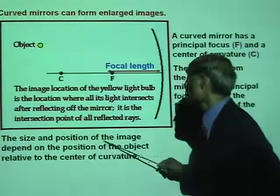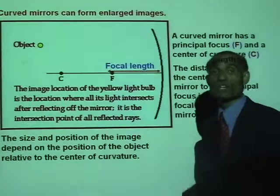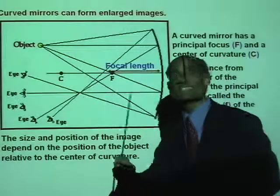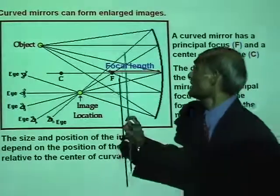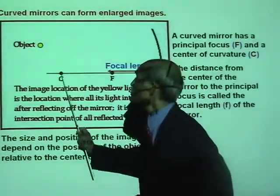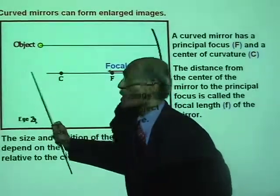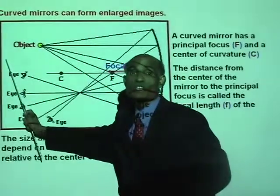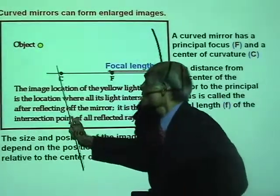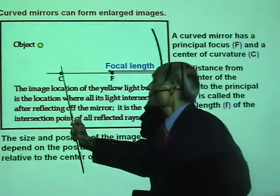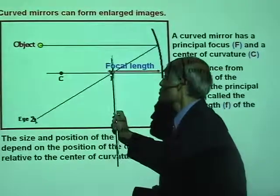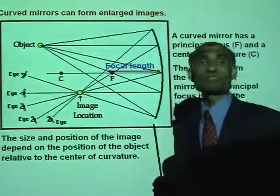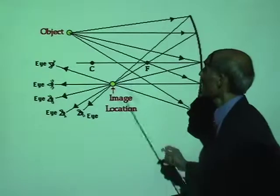The size and position of the image depends on the position of the object relative to the center of curvature. If you place the object beyond the center of curvature, or if you place the object between the center of curvature and the mirror, the images will be different. We will look at a couple of those cases.